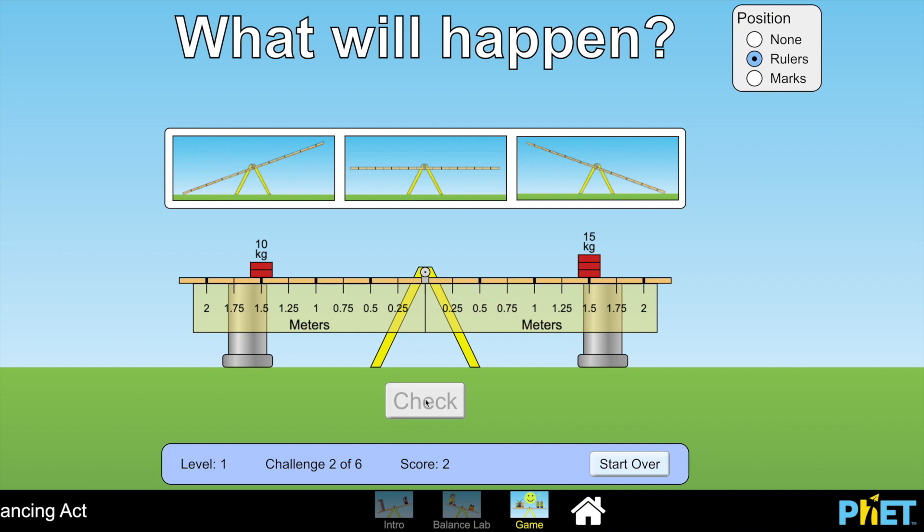In this case, the two masses are at the same distance from the pivot, 1.5m. However, the 15kg mass will produce a larger force than the 10kg mass. As a result, the system will move in the clockwise direction, like so.